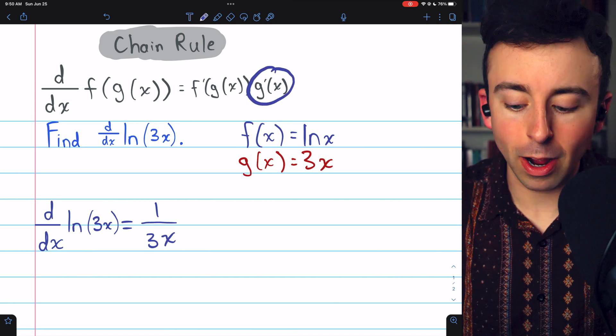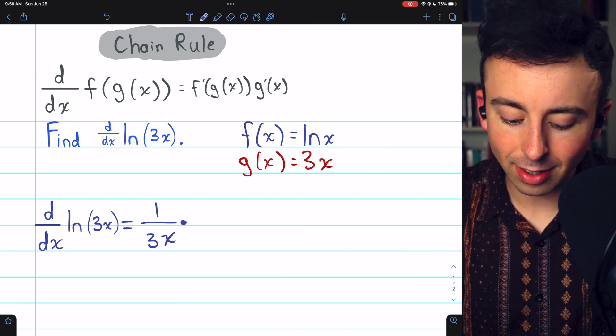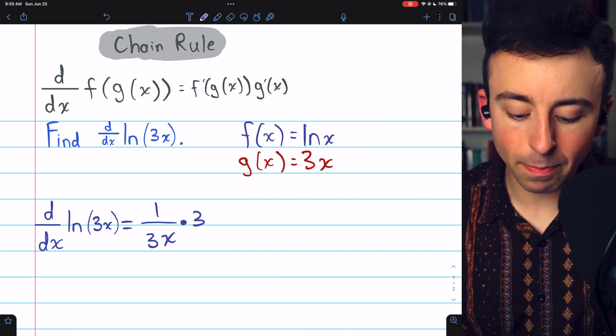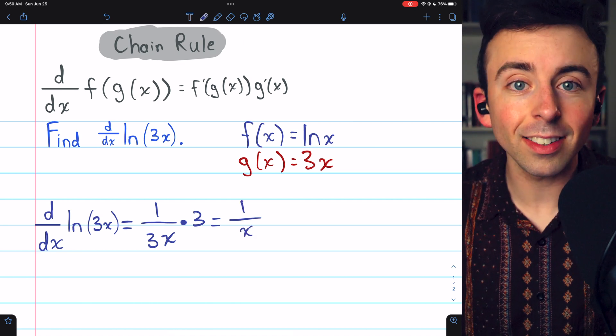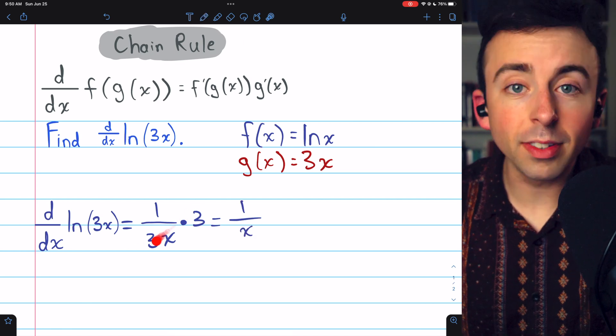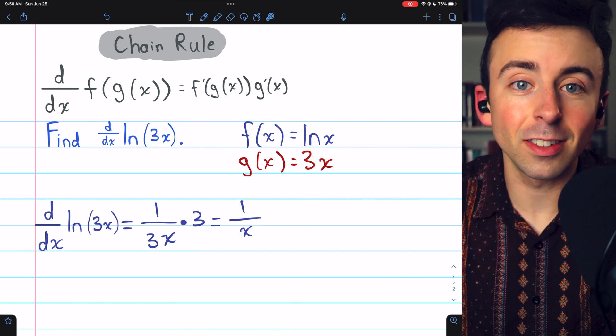Then we just multiply by g prime, the derivative of the inside function. The inside function is 3x, and the derivative of that is 3. You can see there's cancellation, and the derivative turns out to be 1 over x. And you can see how it would have worked out the same way, no matter what number was getting multiplied by x, as long as it's non-zero.